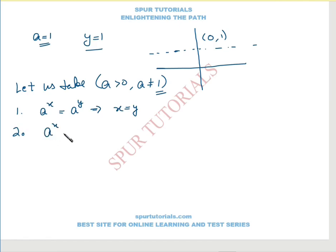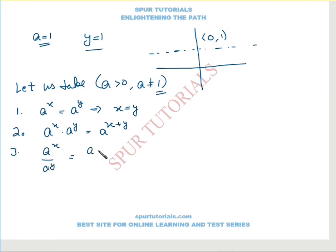Next, a raised to power x multiplied by a raised to power y equals a raised to power (x plus y) — whenever the base is the same in multiplication, you may add their powers. Also, a raised to power x divided by a raised to power y equals a raised to power (x minus y) — when dividing two terms with the same base, we subtract the powers.